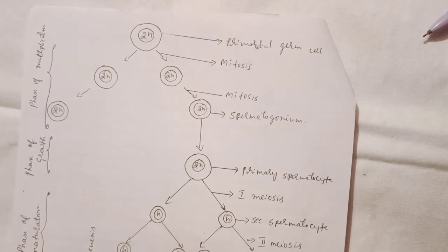Hello viewers, welcome to my channel. Today let us discuss the schematic representation of spermatogenesis. First, the primordial germ cell divided. The primordial germ cell divides into two diploid germ cells by the activity of mitosis.